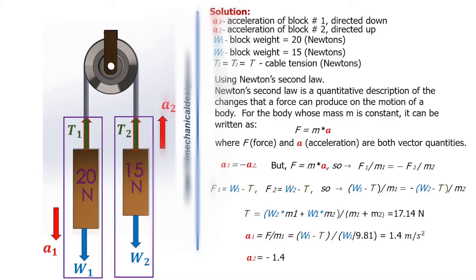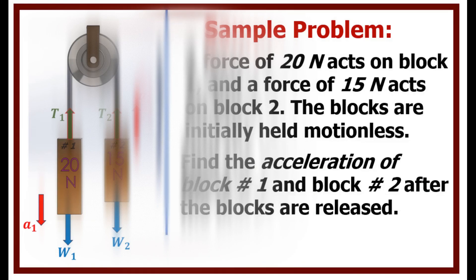a2 equals minus 1.4 meters per second squared. I hope you found this video helpful.